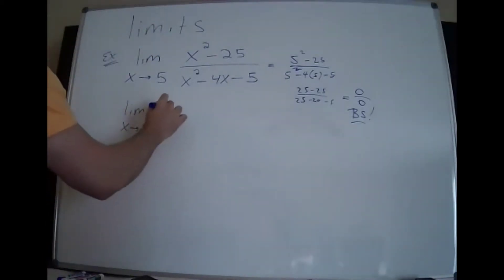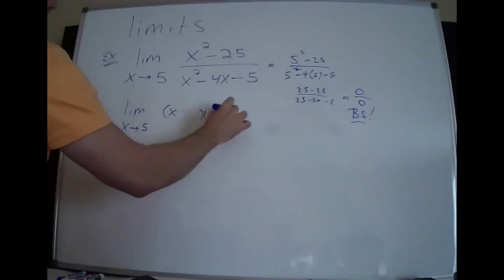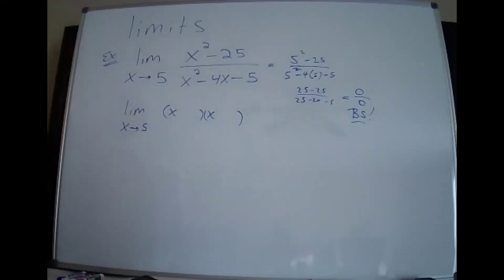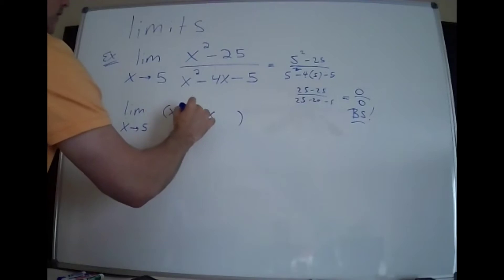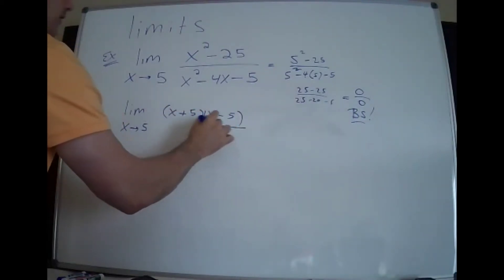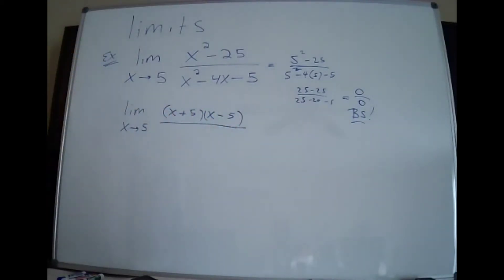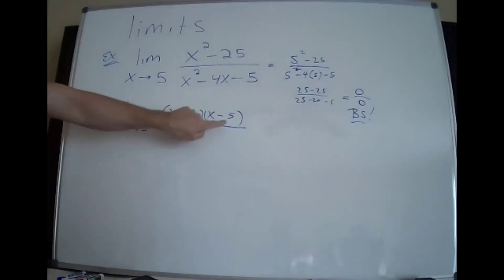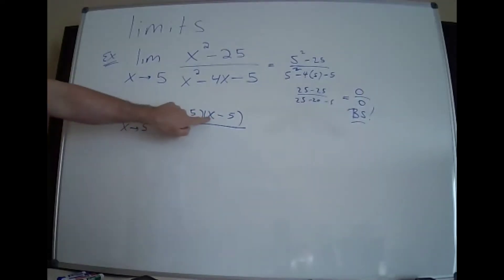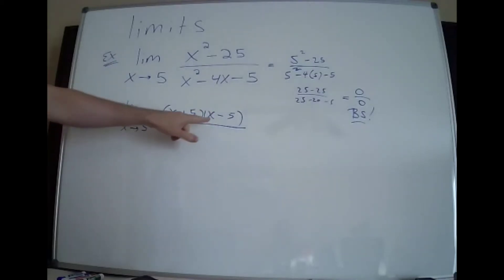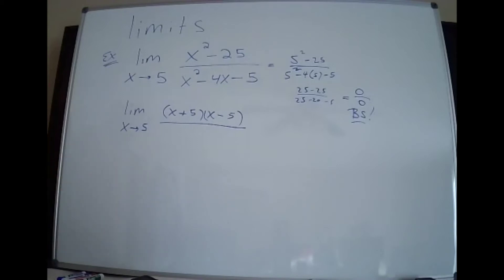The top expression is called a difference of perfect squares. x squared and 25 are both perfect squares, so this factors into x plus 5 times x minus 5. Now, this x minus 5 is the term that's screwing everything up, because if you put 5 in there you get 0. So I'm hoping to get another x minus 5 on the bottom to cancel this one out, so I don't have to worry about getting zeros when I plug in.